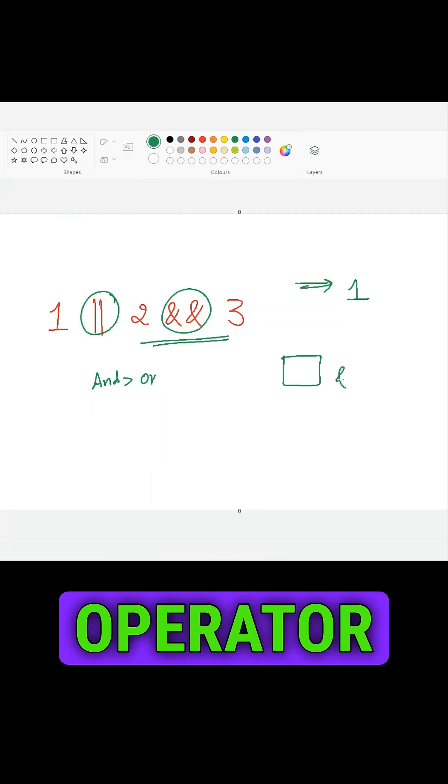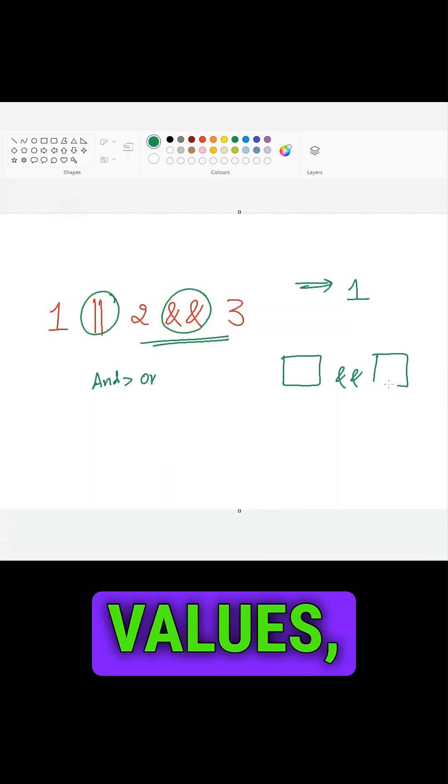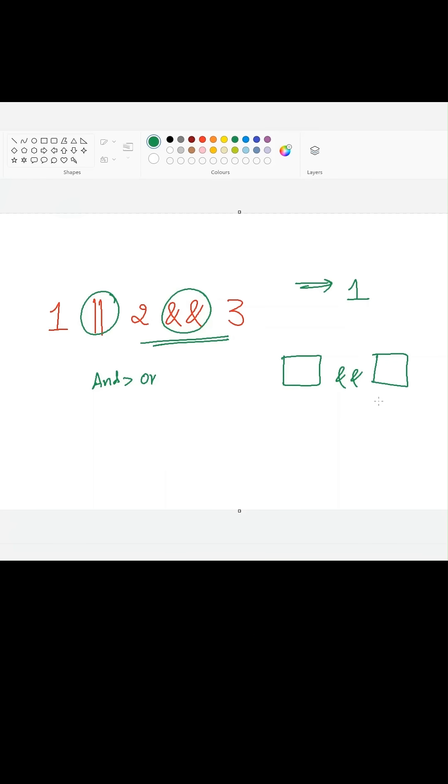So whenever we are using the and operator between two truthy values, JavaScript will take the last truthy value and return it. Here 2 and 3 are both truthy values, so 3 will be returned.